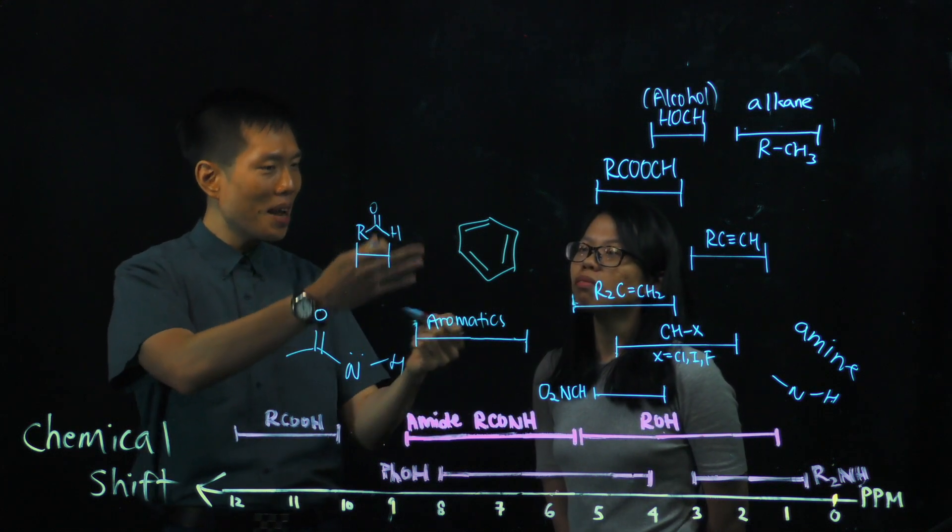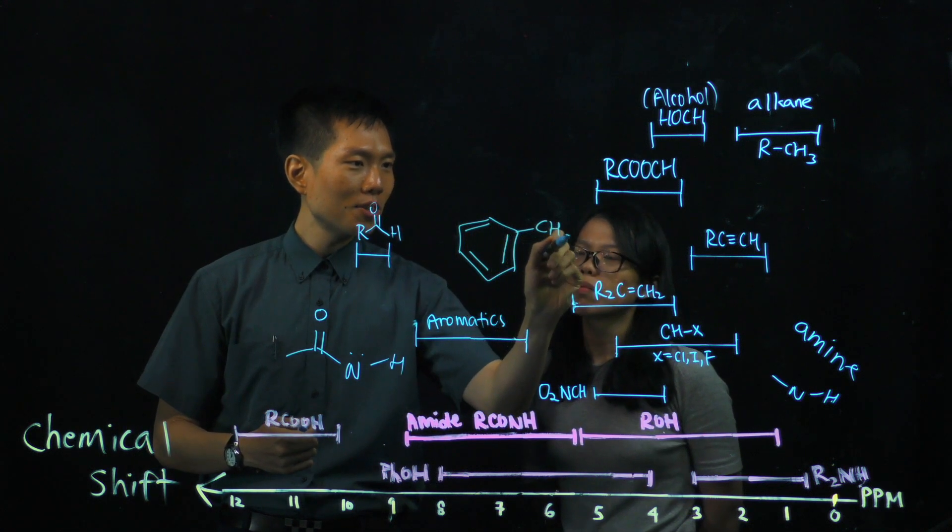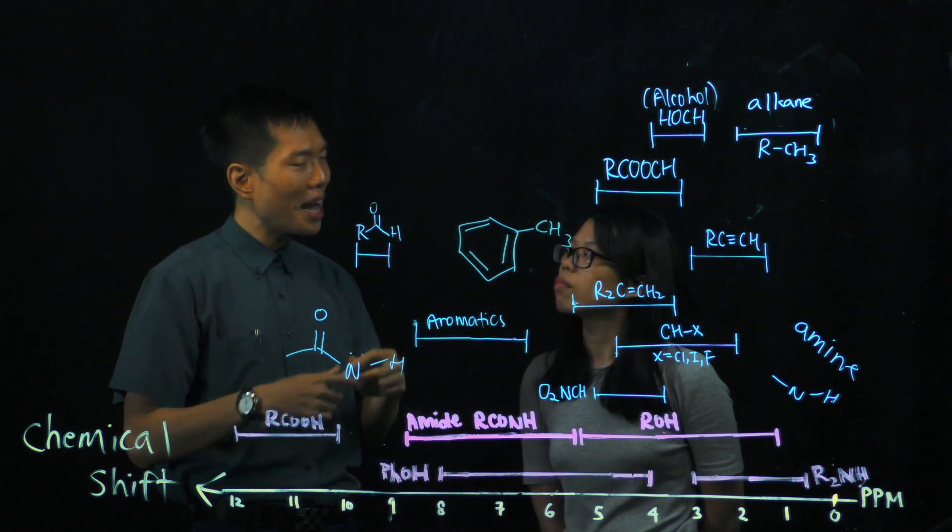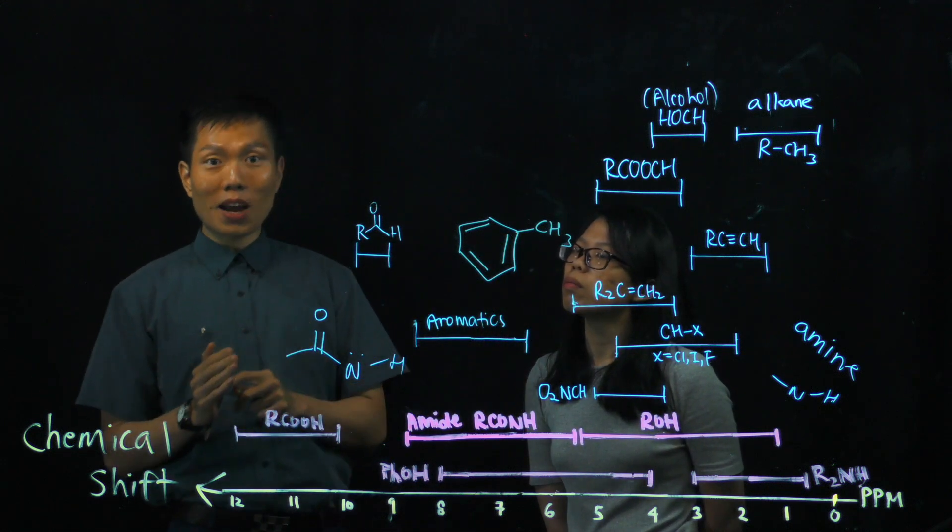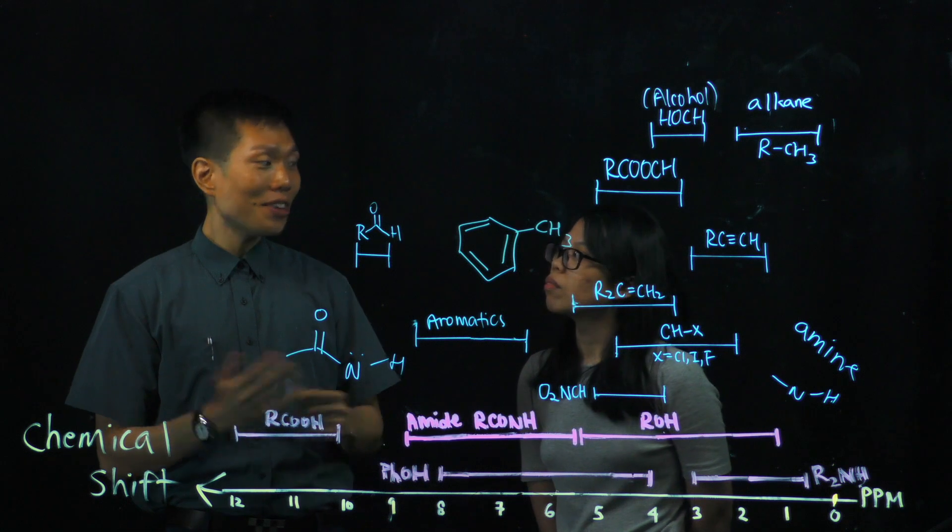So, benzene is aromatic. If you have a methylbenzene, it's also called aromatic because it's a certain smell, which might not be pleasant to everybody, but at least it shows some fragrance.